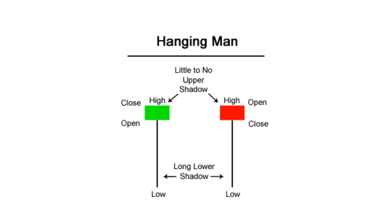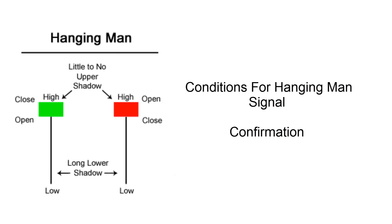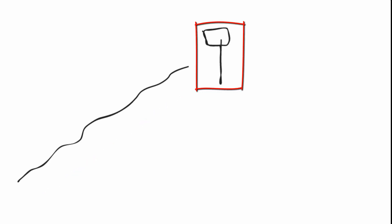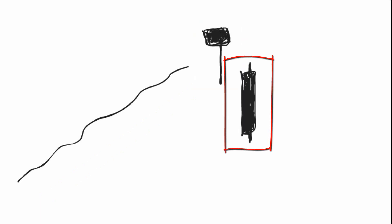What happens on the next day after the hanging man pattern is what gives traders an idea. Conditions for hanging man signal confirmation: First condition, hanging man should form after an uptrend. Second condition, there should be a gap up opening. Third condition, lower shadow at least twice as big as the real body. Fourth condition, real body should be bearish. Fifth condition, confirmation next day bearish candlestick.